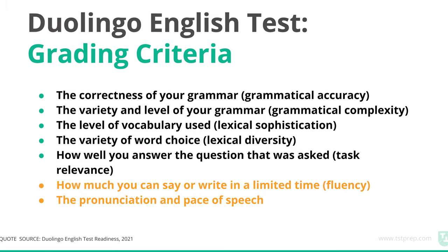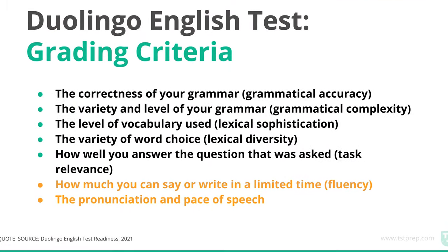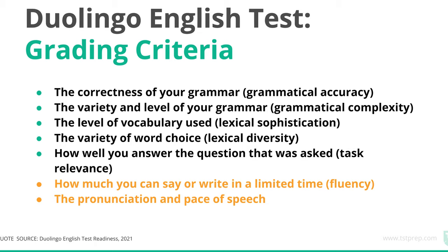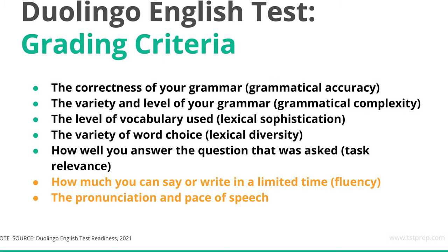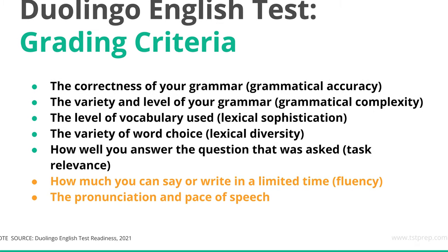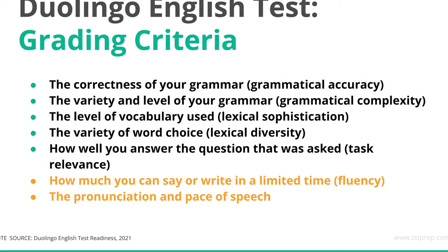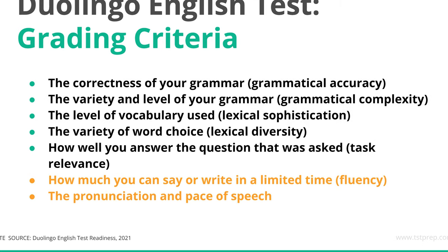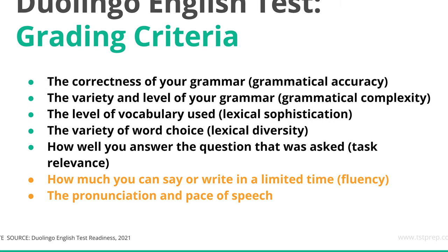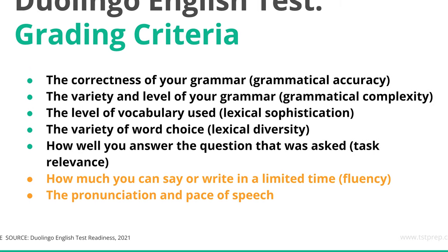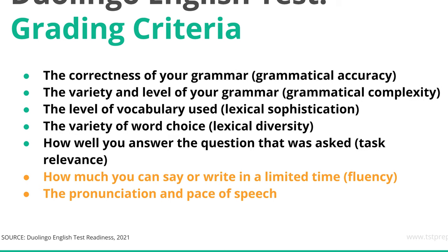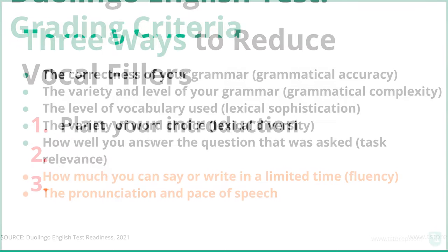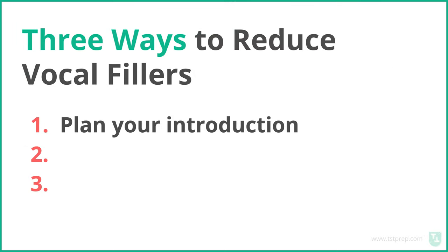Part of the Duolingo English test grading criteria is how much you can say in a limited amount of time and your pronunciation and pace of speech. If you say 'uh' or 'um' too much, it's going to hurt how much you can say in a limited amount of time. So, how do you fix this problem?